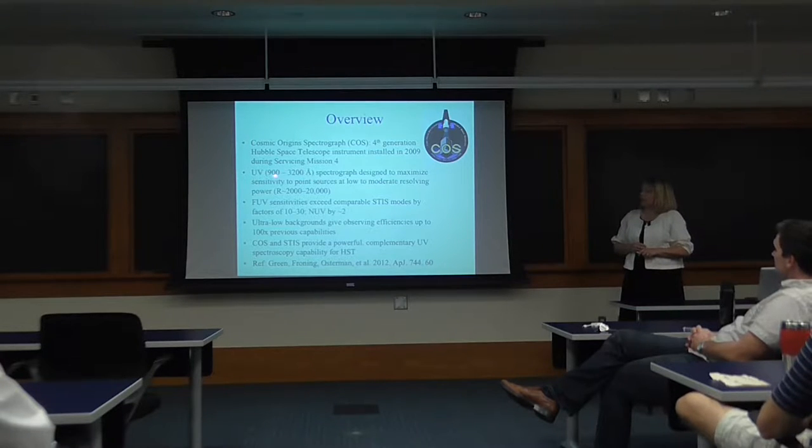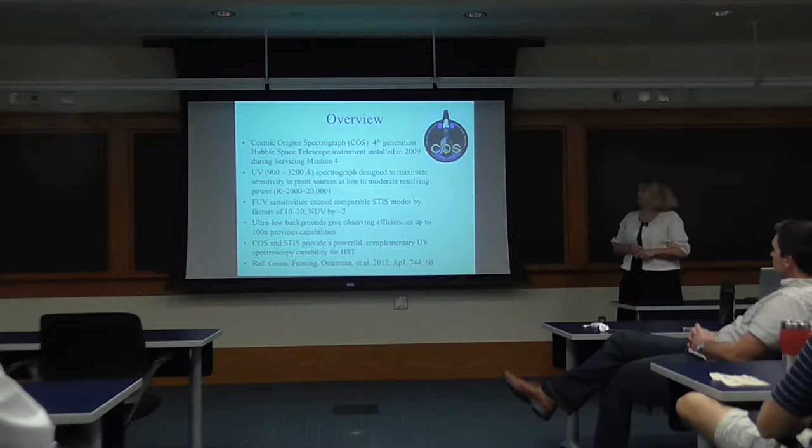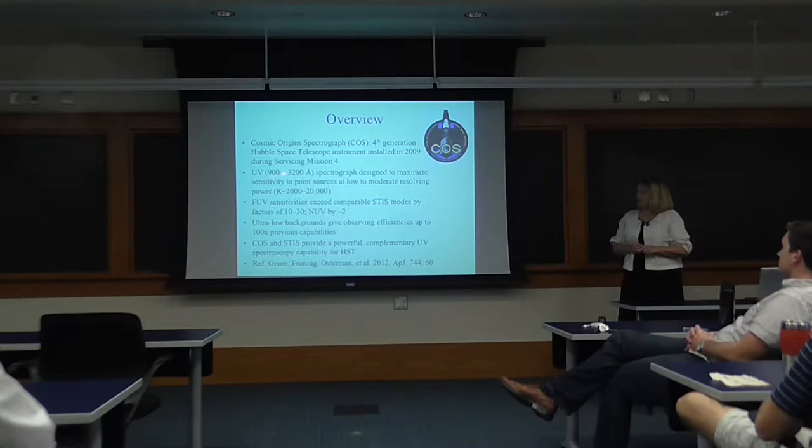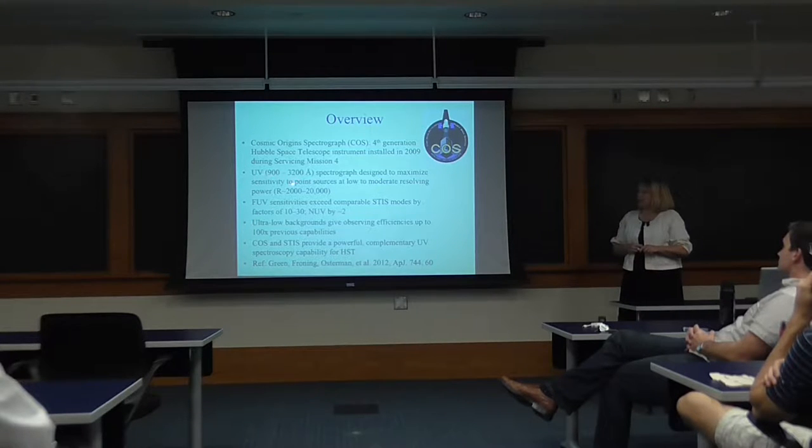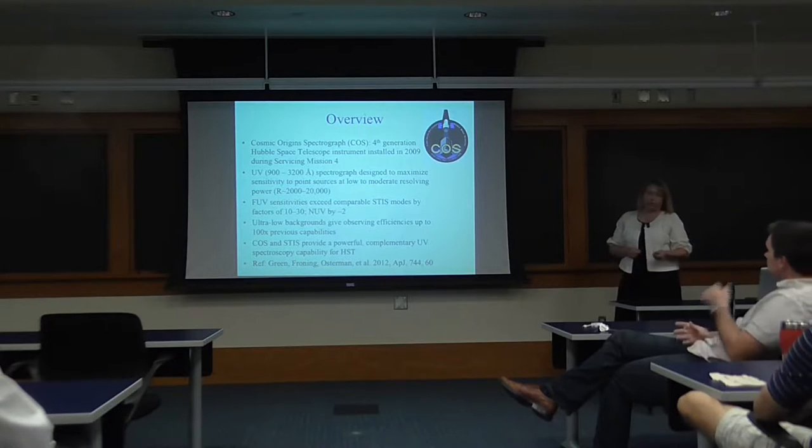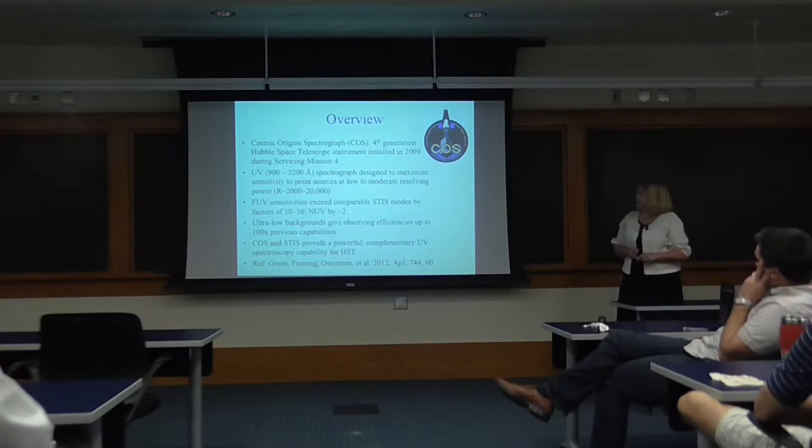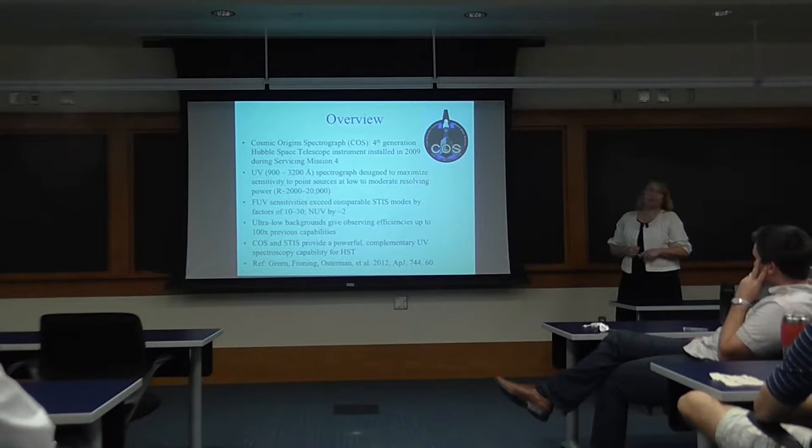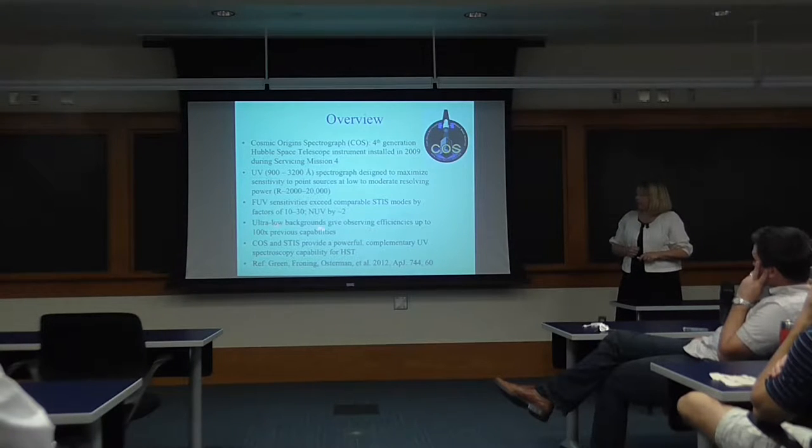COS in particular is a UV spectrograph. It covers from about the Lyman limit to 3,200 angstroms. The intent of the instrument is to maximize sensitivity to point or point-like sources at resolving powers of 2,000 to 20,000. The far UV sensitivities, from around Lyman alpha to 1800 angstroms, exceed comparable modes in STIS by factors of 10 to 30. The backgrounds are significantly lower than STIS, so we're improving both the signal and decreasing the noise.